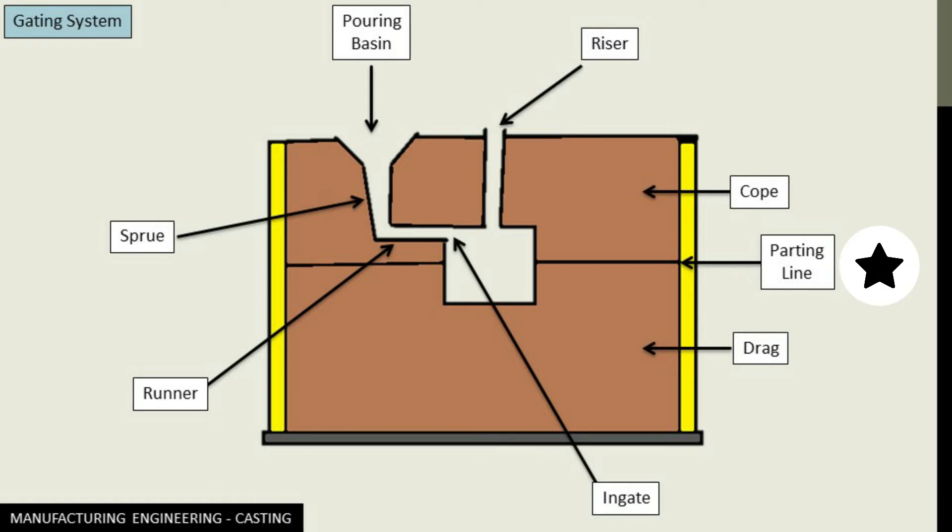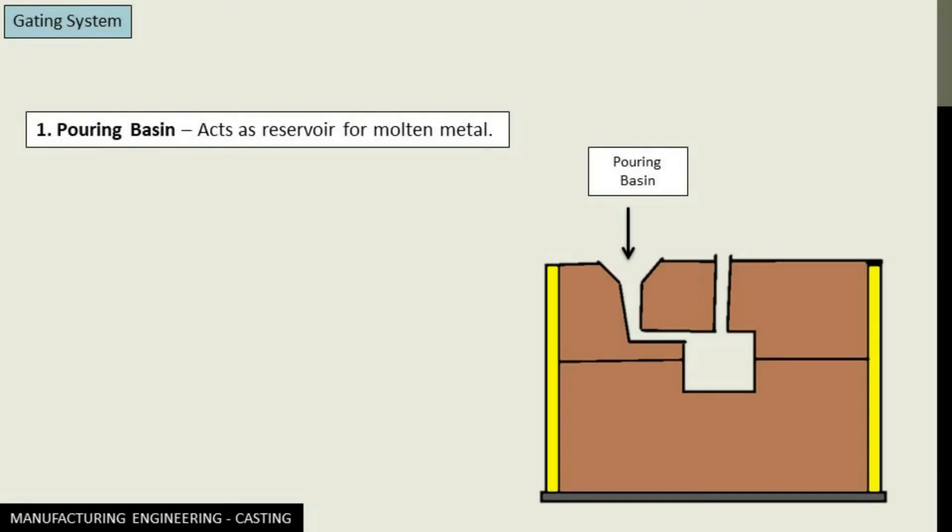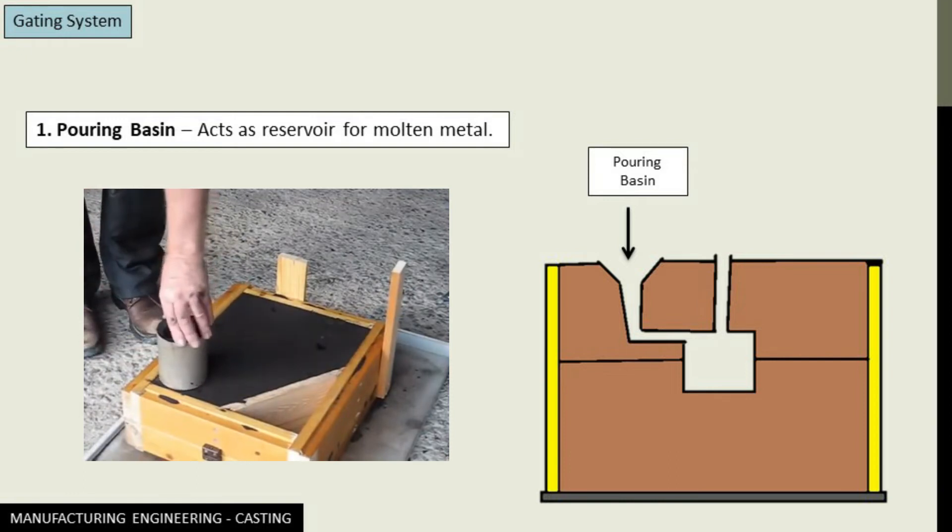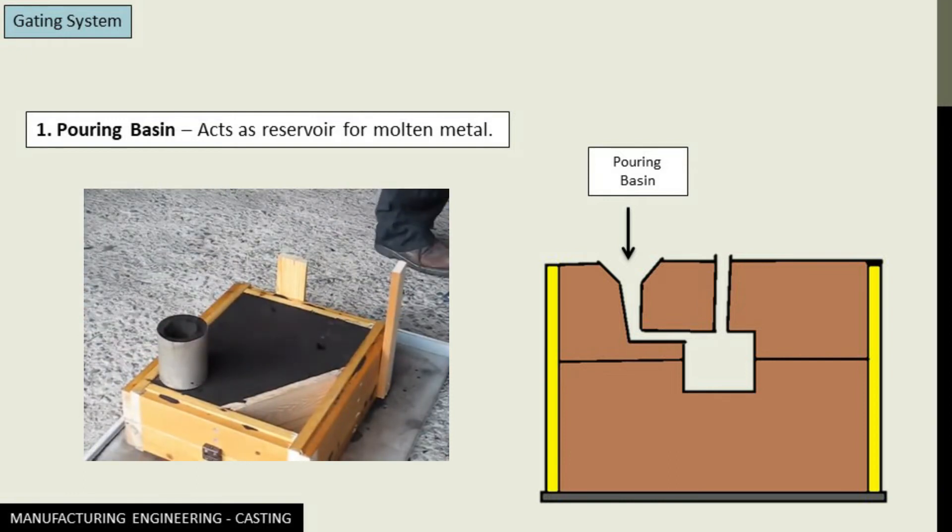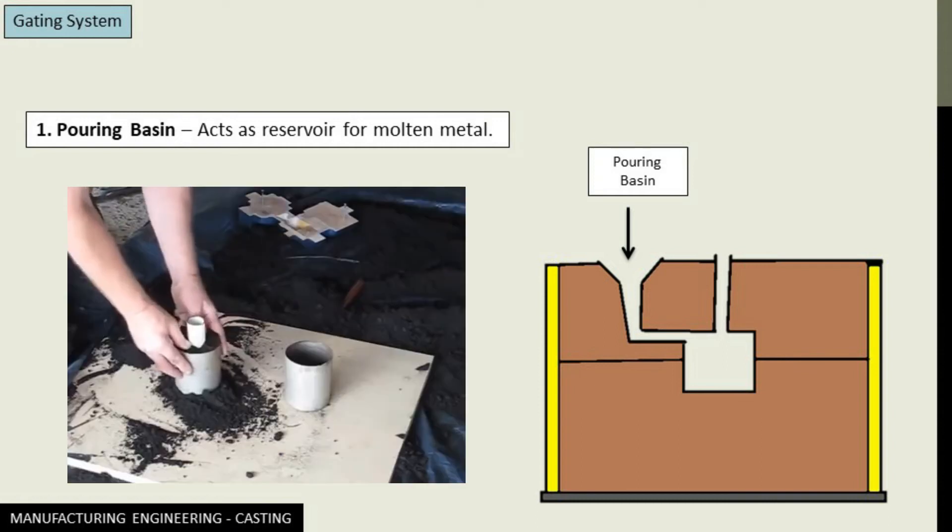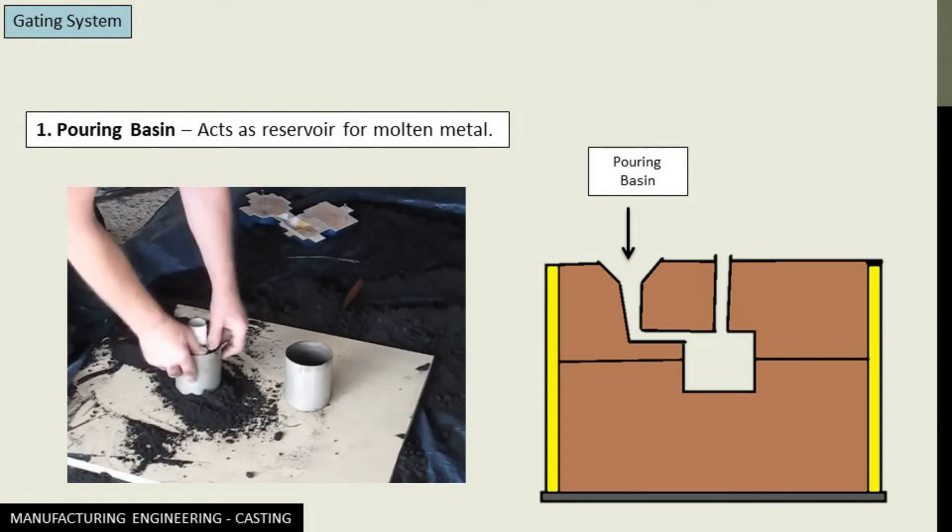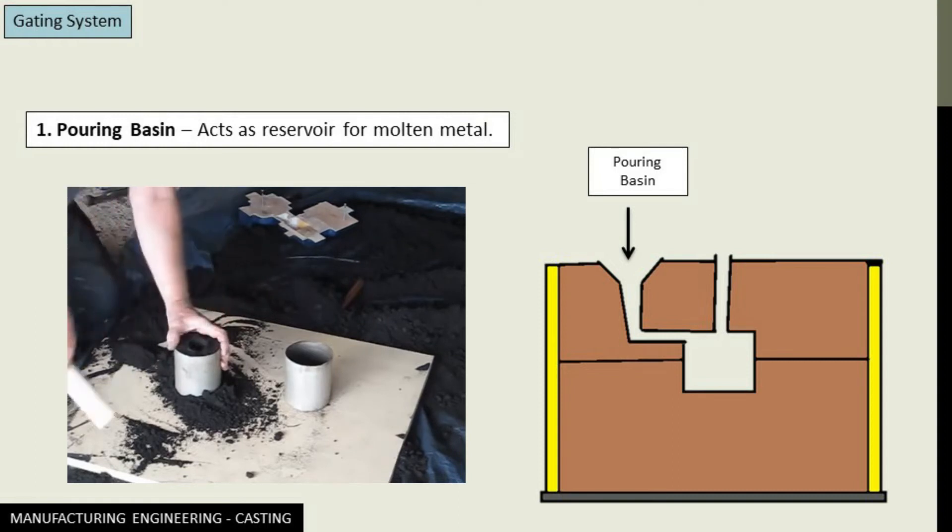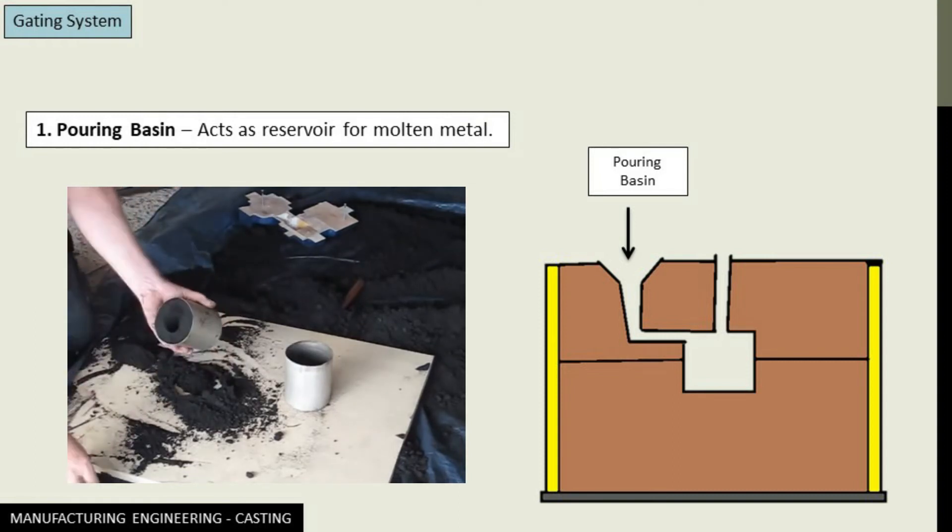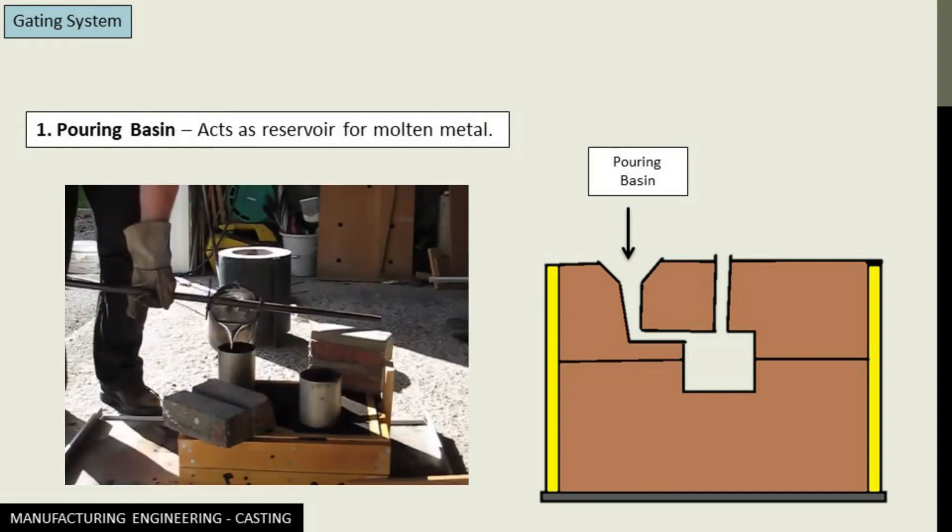Then we have the parting line, cope, and drag. These were discussed earlier as well. Now this pouring basin is not pre-made. It is made after the mold has been completed. Generally in hand molding, it is done manually and it requires precise hands. As I told earlier, it acts as the reservoir for molten metal and it provides the passage of the molten metal towards the cavity.